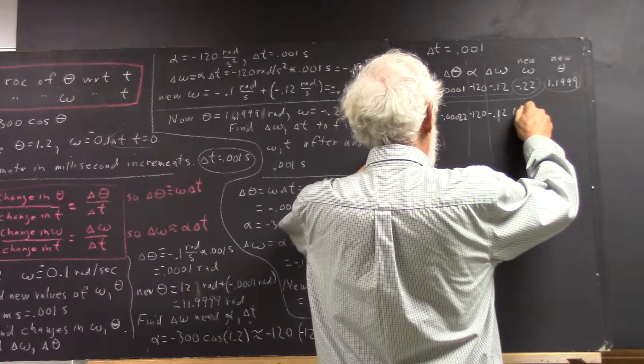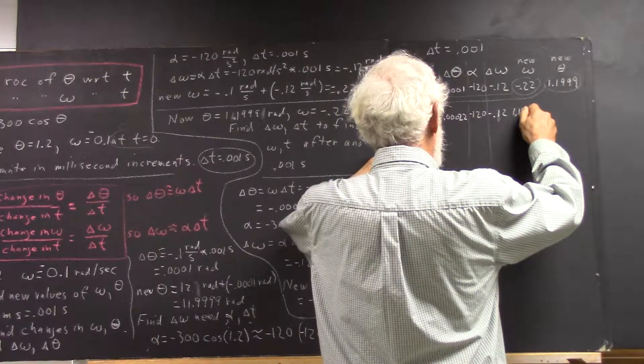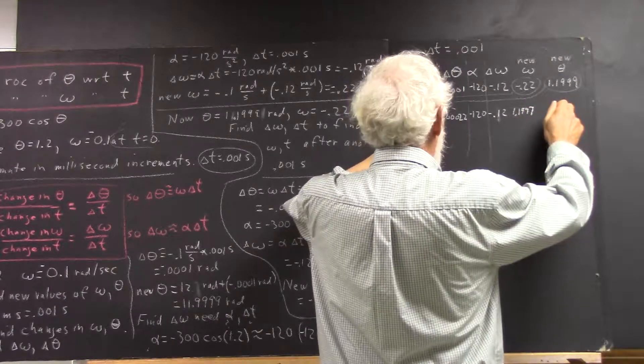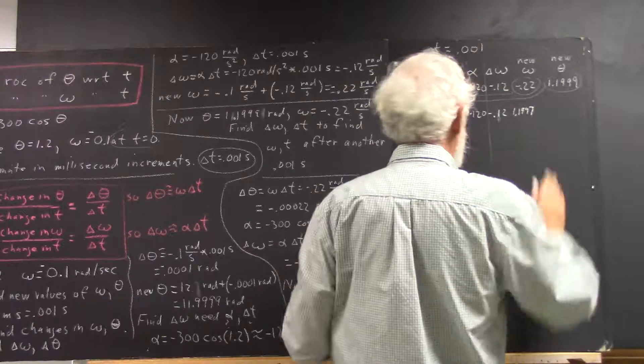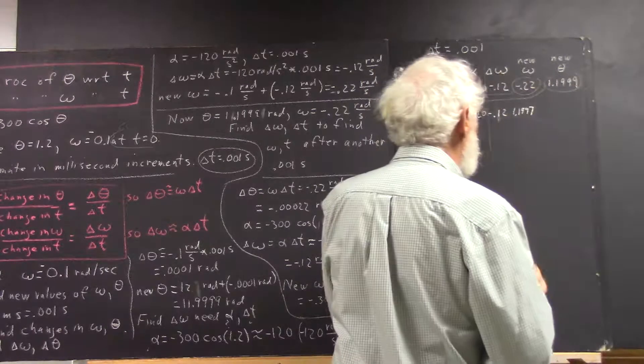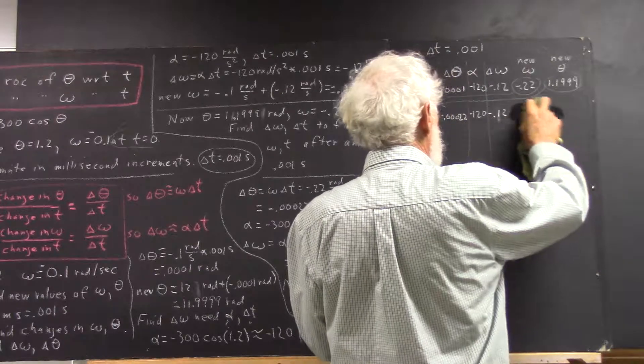Then we add our change in theta to our theta and we get something that rounds off at least to 1.1199997. And now that's our new theta, not our new omega.